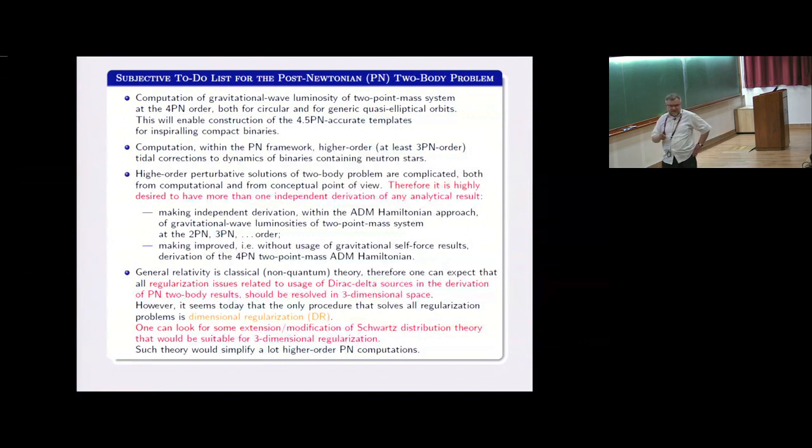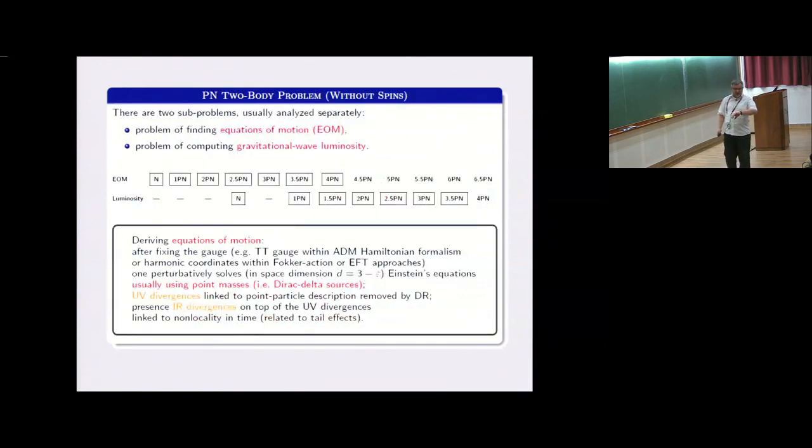The difference was in one ambiguity parameter. They inspired mathematicians who devised a new theory of distributions called the theory of tick distributions. Unfortunately, this theory is still not suitable to use in post-Newtonian equations of motion. But one can ask the question, is it possible to look for some new extension or modification of the Schwartz distribution theory that would be suitable for three dimensional regularization? Up to 4.5 post-Newtonian order, the huge part of the computation is related with the near zone equations of motion. The tail part is relatively simple from the computational point of view. So let's go to some more details.